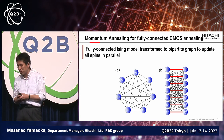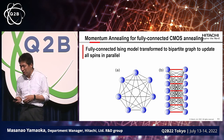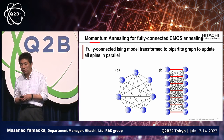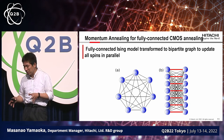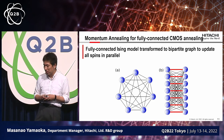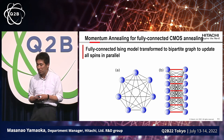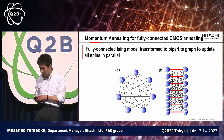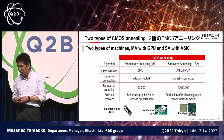So we developed momentum annealing, which uses a fully connected Ising model. In this approach the fully connected Ising model is converted into a bipartite graph, so even with a full connection you can have parallel calculation and find the low energy state as quickly as possible. This is the kind of algorithm we developed, and so we now have two types of CMOS annealing.